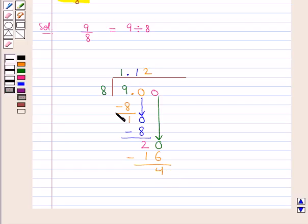This 4 is also not divisible by 8. So we put a 0 here and we bring this 0 down to the right of 4 to get 40 as the dividend.